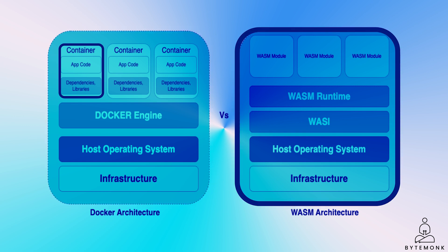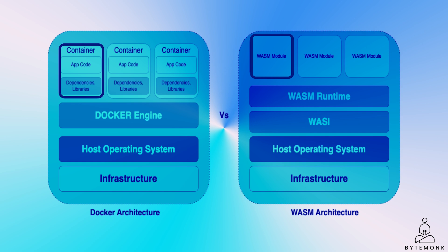As you probably saw already, Docker and Wasm do a lot of things the same way, and both can package applications and enable them to be run anywhere. Docker's architecture diagram has first the underlying infrastructure, then the host operating system, then the Docker engine, and then the containers that have the application libraries, dependencies, and binaries. If you look at the Wasm architecture diagram, you will see the infrastructure, then the host operating system, then WASI — the WebAssembly System Interface — which is responsible for providing access to system resources for the Wasm runtime, and then the Wasm runtime on which the Wasm modules run.